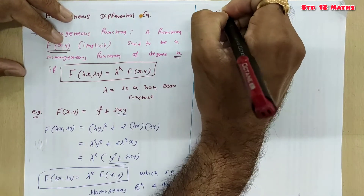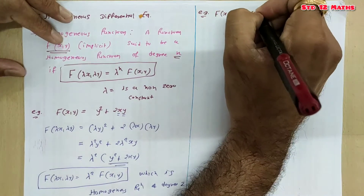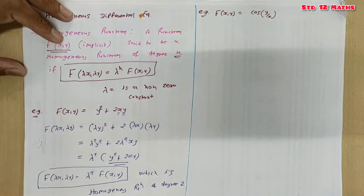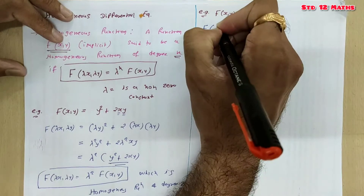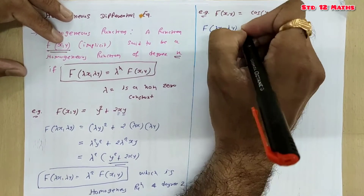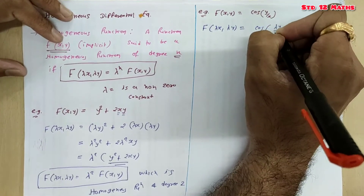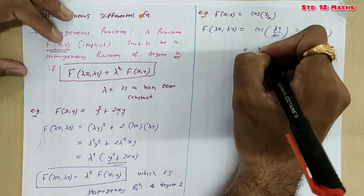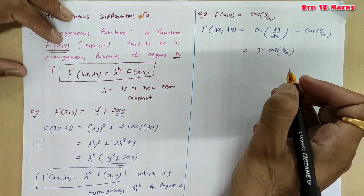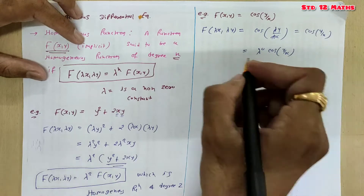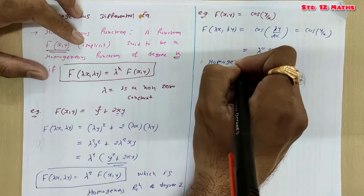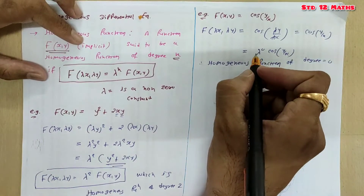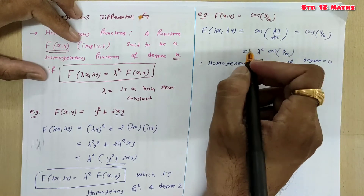Next example: f(x, y) = cos(y/x). Replacing x with λx and y with λy, we get cos(λy / λx) = cos(y/x) = λ⁰ · cos(y/x). So this is a homogeneous function of degree 0, since whatever the power of λ is, that is the degree.